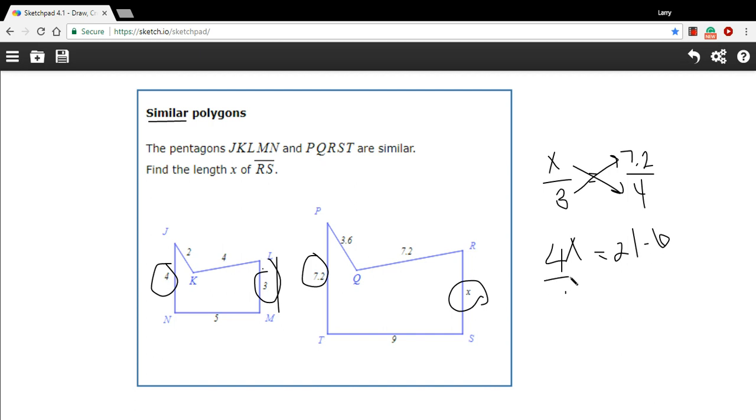And then to solve for x, we just divide by 4 here. And let's see. What is that going to be? I think that's 5.4. Yeah. x is 5.4. So what that means, this side right here is 5.4. So that is how to solve for a side when you have two similar polygons.